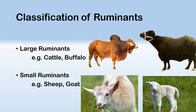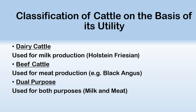These animals can also be classified on the basis of what they produce. Cattle can be classified into dairy cattle, beef cattle, and dual purpose. Dairy cattle is used for milk production, beef cattle is raised for beef production, and some cattle are raised for dual purpose — both milk and beef. An example of dairy cattle is Holstein Friesian, an example of beef cattle is Black Angus, and Sahiwal cattle is mostly used for dual purpose.